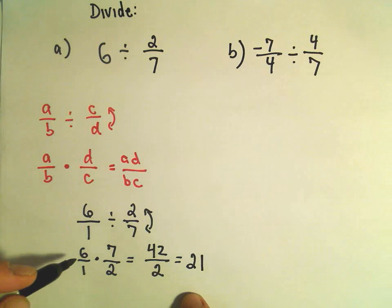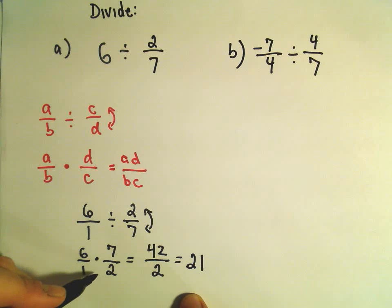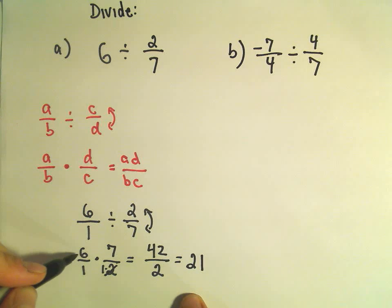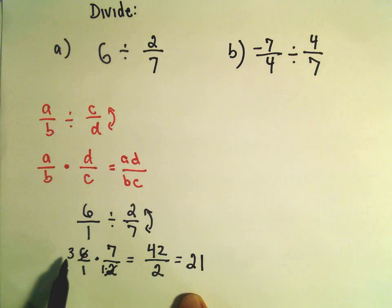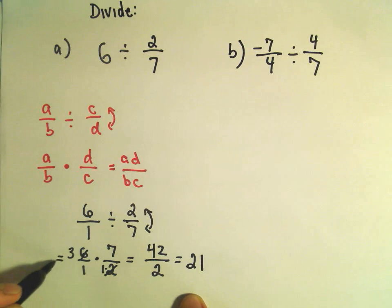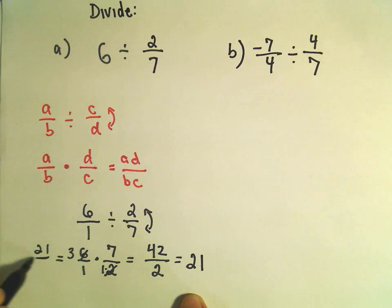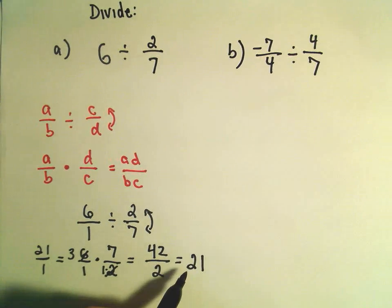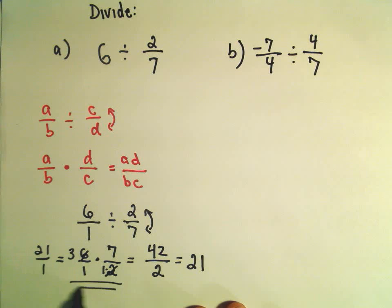Notice the other thing we could have done is we could have canceled. We could have said, you know, there's a 6 on top and a 2 on the bottom. Well, 2 goes into 2 one time, and 2 will go into 6 three times. So if we simplify, we would get 3 times 7, which would be 21. And then on the bottom we would have 1 times 1, so we would get 21 over 1 or 21. So typically I try to cancel things out before I multiply. I found, in my own experience, I think it makes things a little quicker and a little easier. But as long as you simplify at the end, it doesn't really matter.